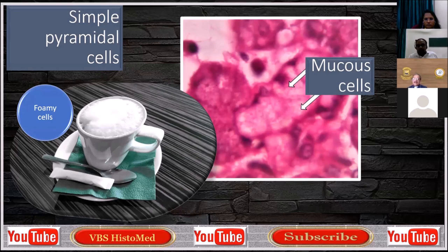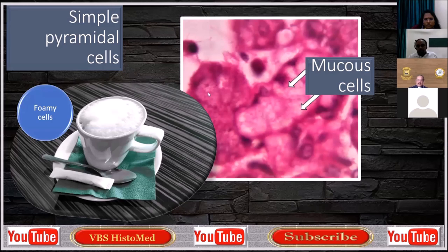The best example may be a cup of milk or coffee at a hotel, where the server will nicely mix it. At the end, he will add a little bit of froth — leftover froth on top of the milk. And if it is coffee, he will add a spoonful of decoration so that it creates a pattern. That will probably be the best example of understanding how simple pyramidal cells or mucus cells look.